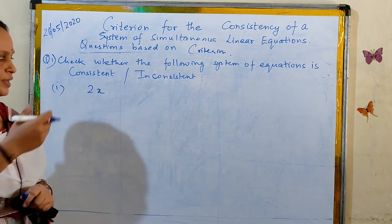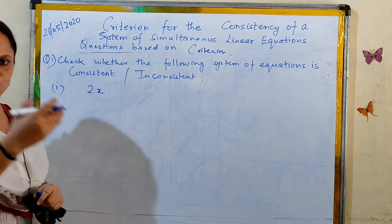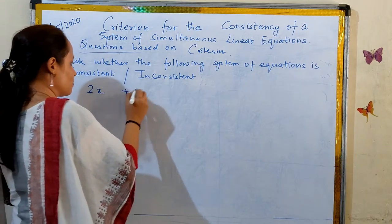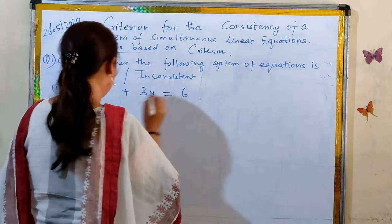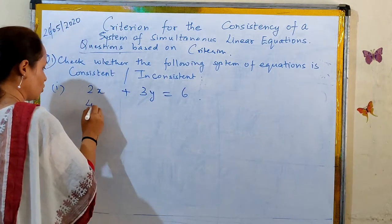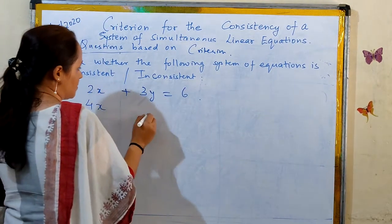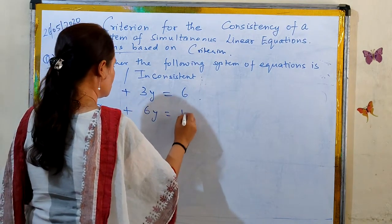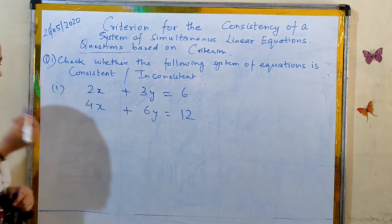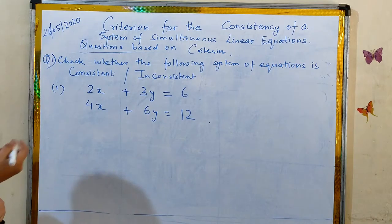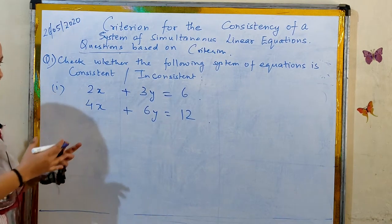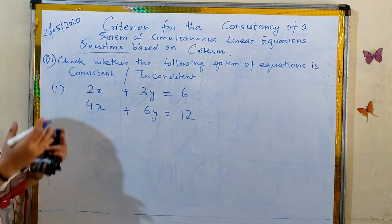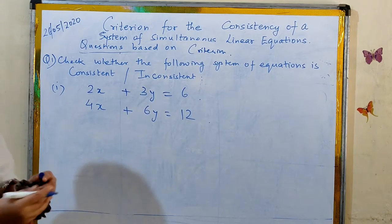We can extend this to 3 unknowns also. The first system of equations is: 2x plus 3y equal to 6, and 4x plus 6y equal to 12. The system of equations in 2 unknowns can be verified whether it is consistent or inconsistent using the conditions we have learned.